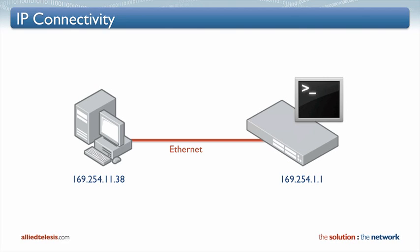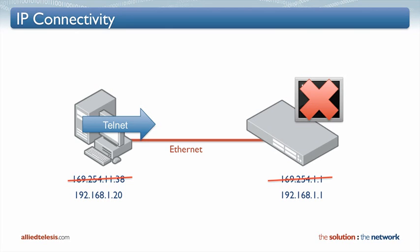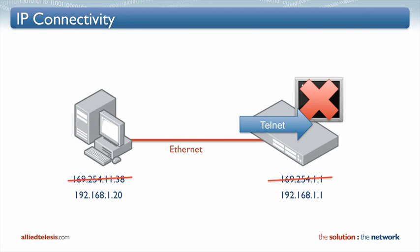Once we're at the command line interface we can change the IP address of the switch to say 192.168.1.1. Once the switch's IP address has been changed, however, we will lose connectivity with the switch because we're no longer in the same network. So then we'll have to change the IP address of the PC to 192.168.1.20, or something that begins with 192.168.1. Then re-establish our Telnet session to get access to the command line interface again and save our changes to the switch.